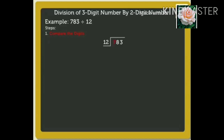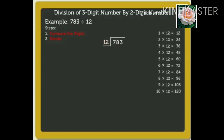Step 1 is to compare the digits. We compare the leftmost digit, the hundreds digit 7, with the divisor 12. Since 7 is smaller than 12, there are not enough hundreds. So, we compare the tens in the dividend with the divisor. Yes, 78 is greater than 12. Therefore, we can divide 78 by 12. Step 2 is doing the division. As the divisor is 12, we use the table of 12 to find a product equal to or less than and nearest to 78. The nearest product is 72. Hence, we write 6 in the quotient above 8.